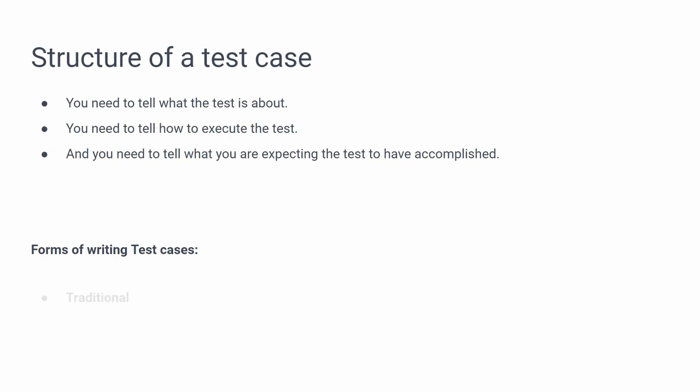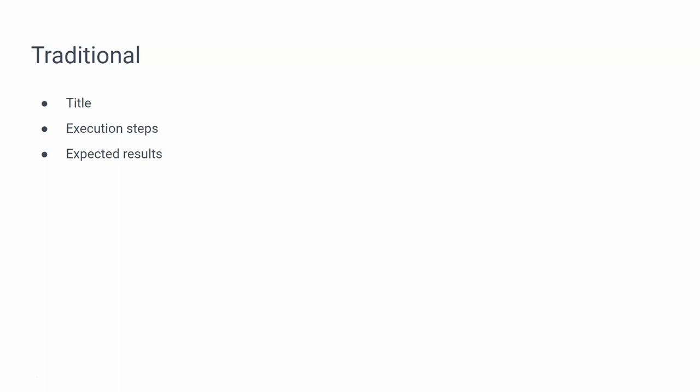There are two main forms of writing test cases: traditional and BDD style, which stands for behavior-driven development. In the traditional form, you have a title, execution steps, and expected results — more flexible with no strict format. Any test case management system out there is going to have those three things, and they should all be required. You have to have a title, the steps, and the expected results.